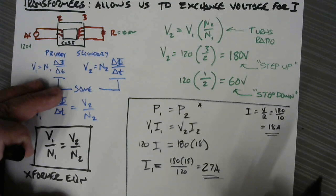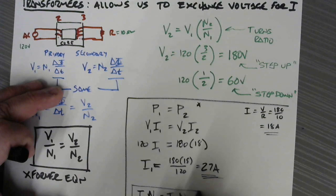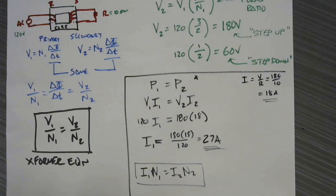So we could come up with another example, and that would be that the current on 1 times the number of turns on 1 equals the current on 2 times the number of turns. This could be a secondary transformer equation, but I prefer just to solve for the current from the voltages. There's one more little thing about transformers other than that.